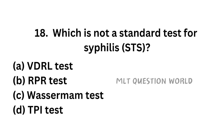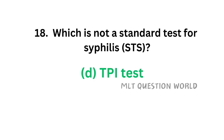Question number 18. Which is not a standard test for syphilis? Option A, VDRL test; Option B, RPR test; Option C, Wassermann test; Option D, TPI test. The correct answer is Option D, TPI test. Treponema pallidum immobilization test is not a standard test for syphilis.